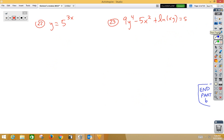In problem 22, we have another a to the x problem, chain rule. So dy/dx is equal to 5 to the 3x, natural log 5, multiplied by 3.